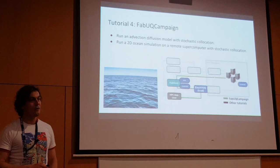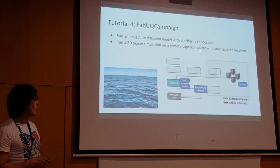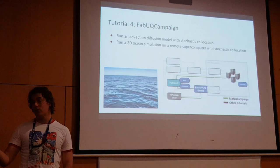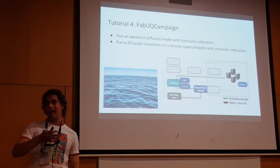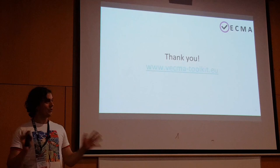The last tutorial I want to cover is called FabUQ Campaign. It showcases a number of sampling techniques, mainly focusing on stochastic collocation. It has two different models: an advection-diffusion equation model and a two-dimensional ocean model, which use EasyVVUQ to do stochastic collocation samples. You run these simulations using PAPSIM — locally or on a remote supercomputer for the ocean model — and then afterwards you analyze all the data and get confidence intervals, giving you a notion of the uncertainty in your simulations.